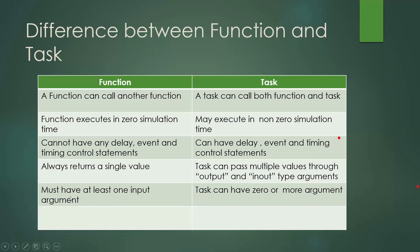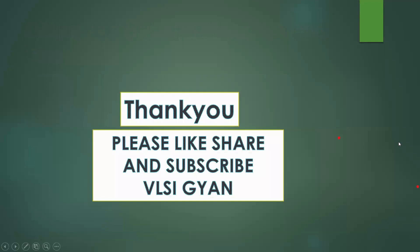A function must have at least one input argument, because its main purpose is to perform an operation on inputs and return a value. A task, however, can have zero or more arguments — there is no restriction that at least one input must be present. This is the key difference between a function and a task in Verilog. I hope this video was helpful in understanding functions and tasks in Verilog and the difference between them. Please like, share, and subscribe to my channel — thanks for watching.